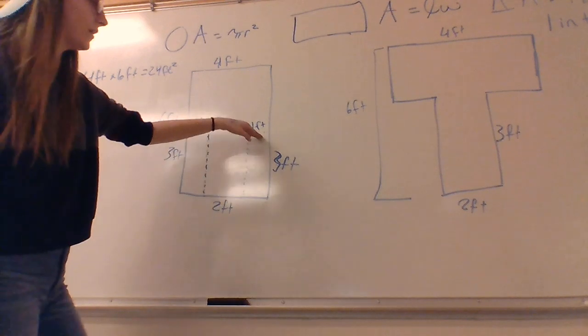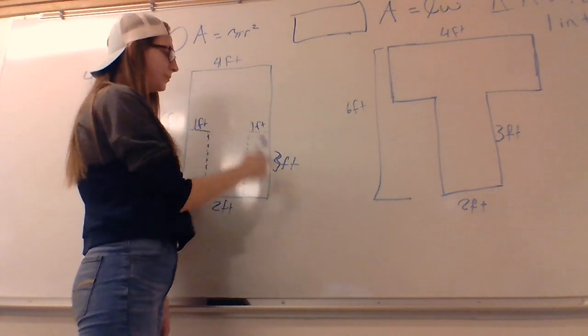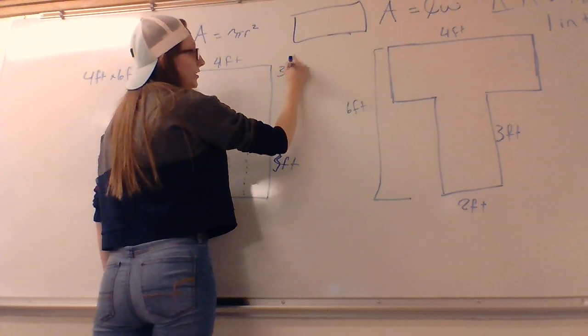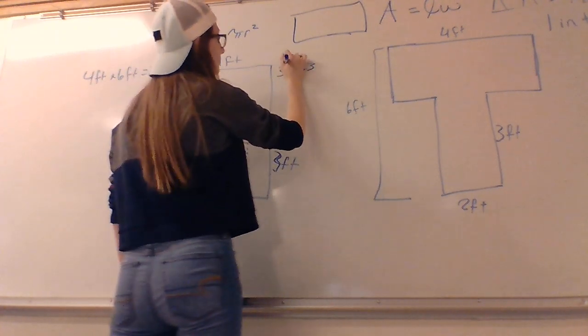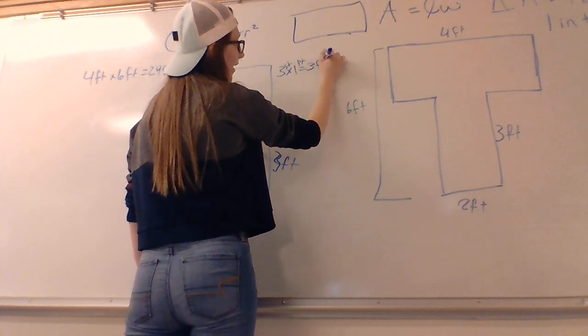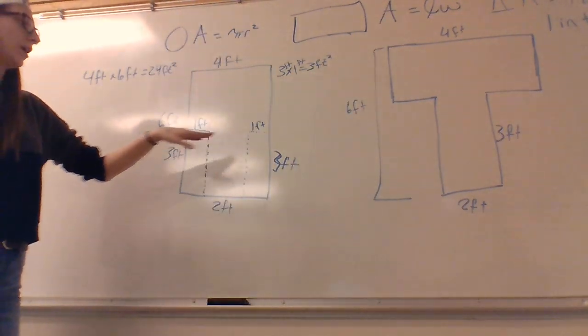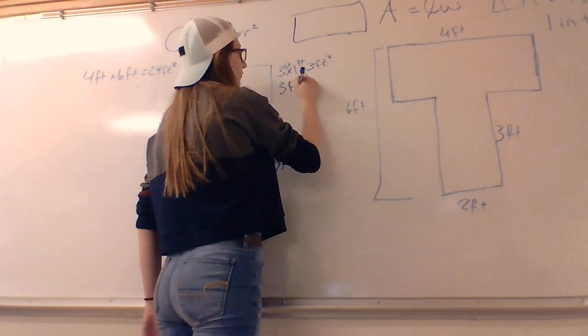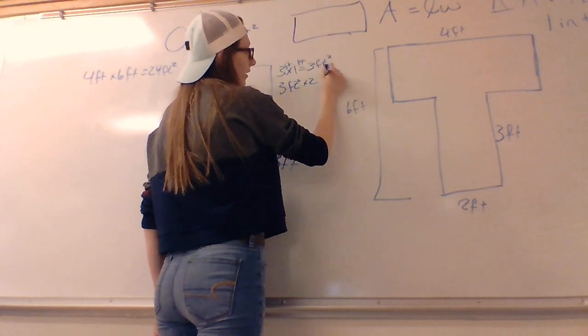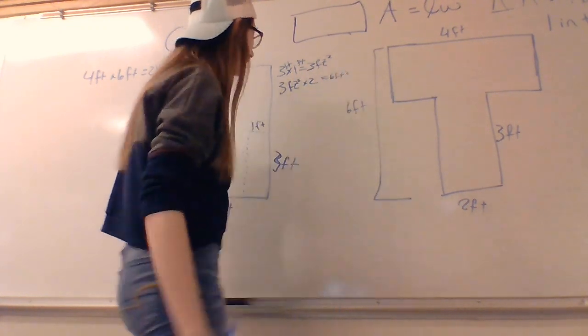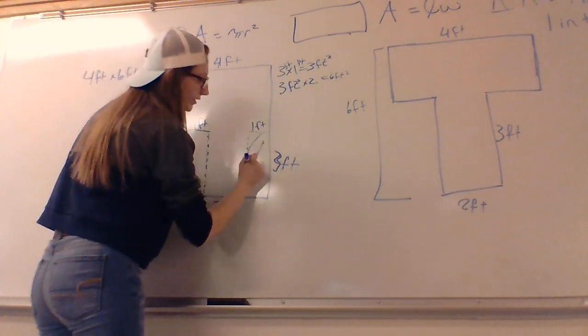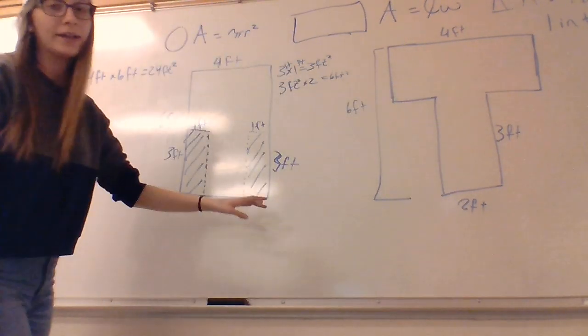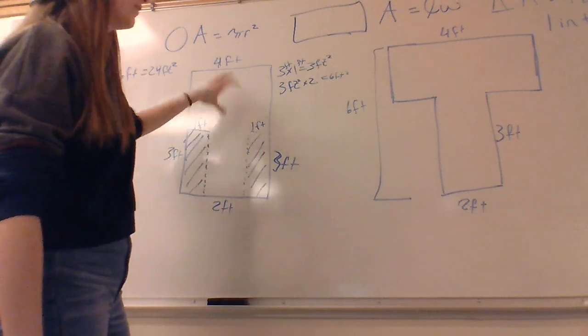We need to find the areas of our little cutout rectangles. To do so we are going to multiply the sides because area of a rectangle is length times width, just like we did for this whole thing. Three times one equals three feet squared. Since we have two of those three feet squared areas, we need to multiply our three by two. So three feet squared times two equals six feet squared. Six feet squared is the area of these cutout chunks. And to find the area of the T shape we need to subtract these areas from the whole rectangle.